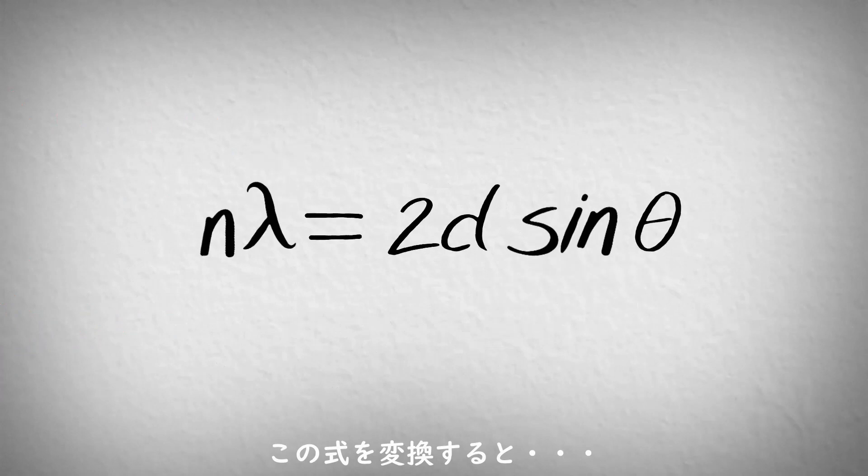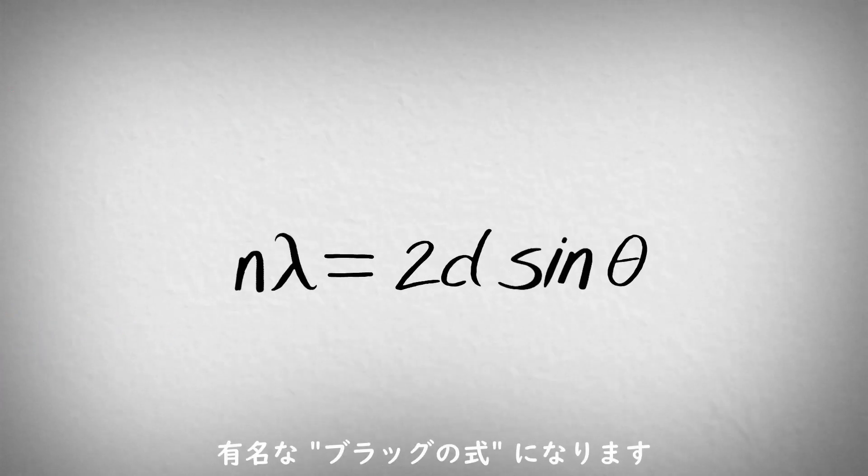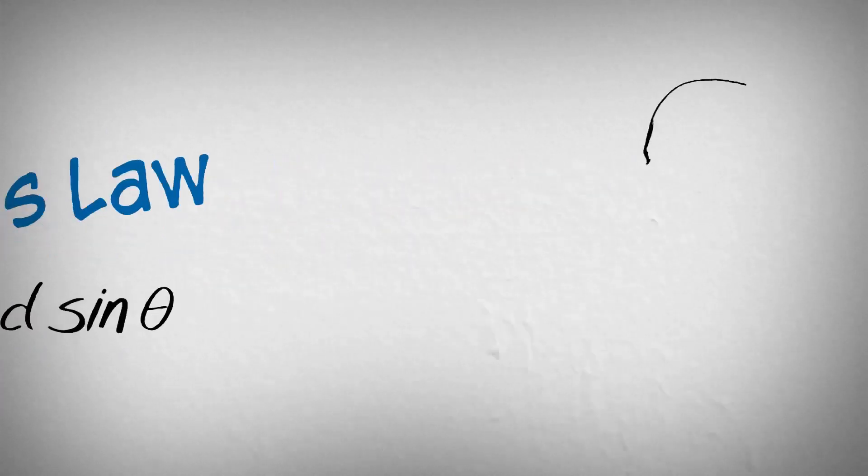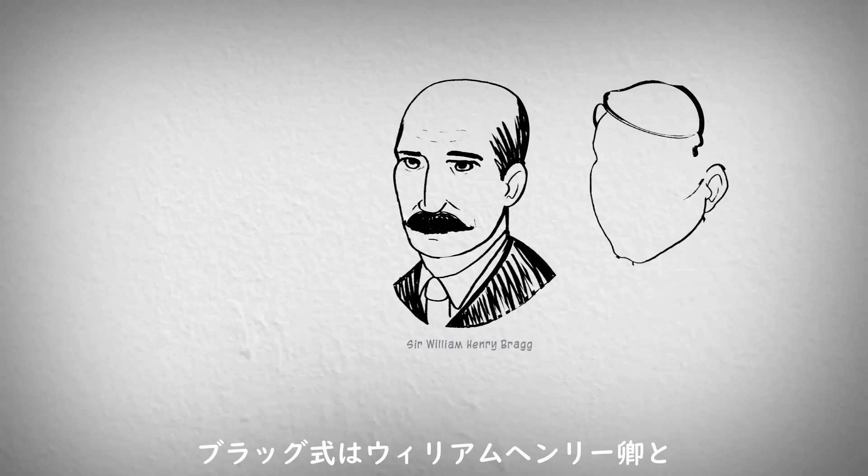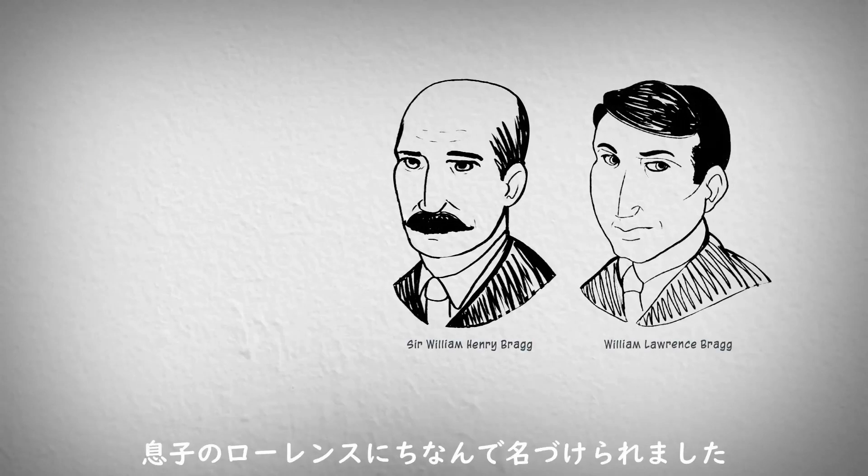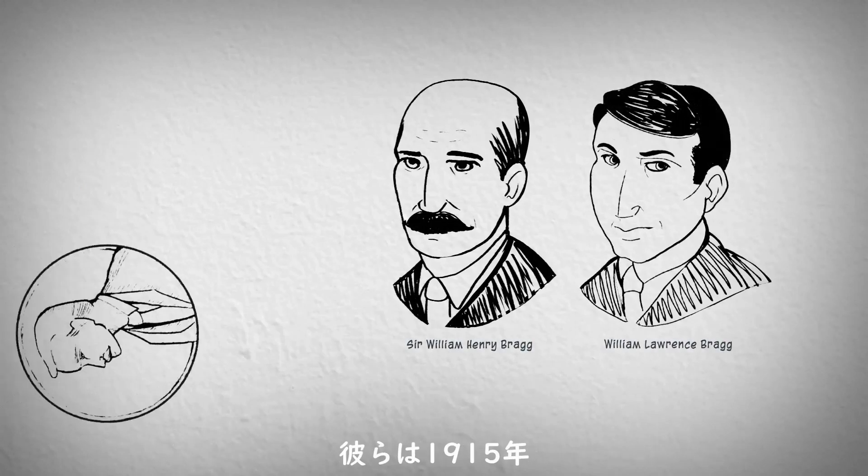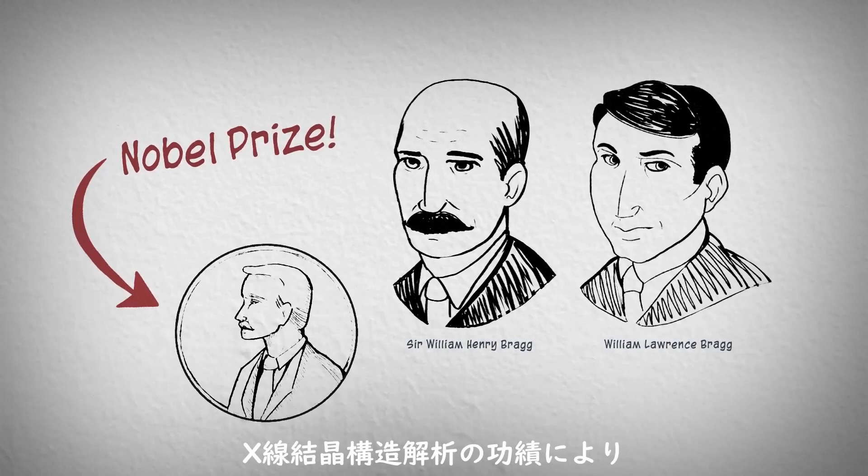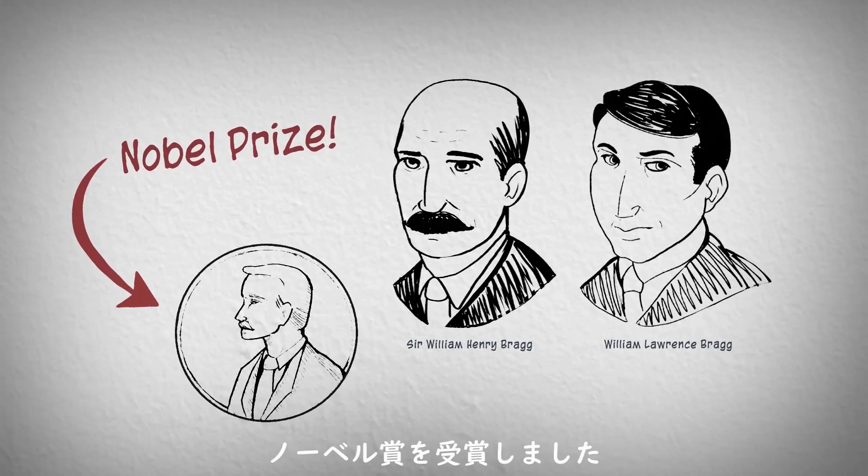Rearranging this equation yields an equation commonly known as Bragg's Law, named after Sir William Henry and William Lawrence Bragg, the father-son team who won the Nobel Prize in 1915 for their work analyzing crystal structures with X-ray diffraction.